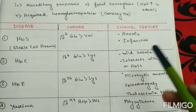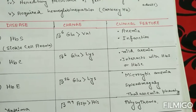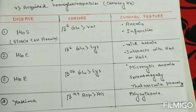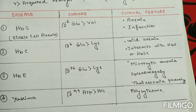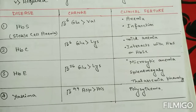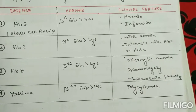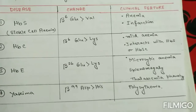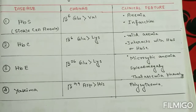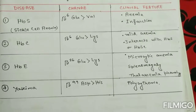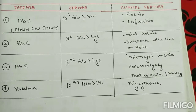The manifestation of HbC disease is mild anemia; it interacts with HbS to cause HbSC disease. In HbE disease, at the 26th position of beta globin, glutamate is replaced by lysine, and the manifestation is microcytic anemia, splenomegaly, and a thalassemia phenotype. In Hb Yakima, at the 99th position of beta globin, aspartate is replaced by histidine, and polycythemia is the main clinical feature.